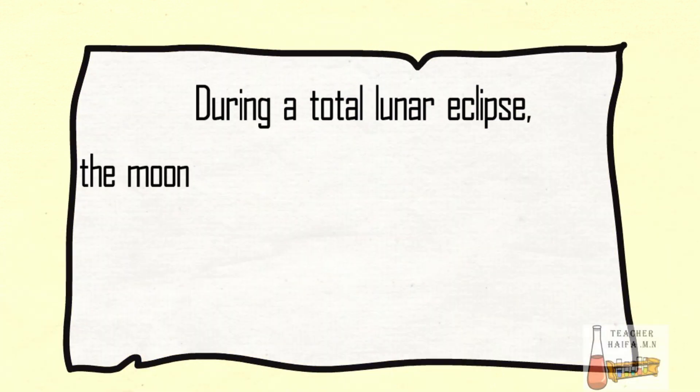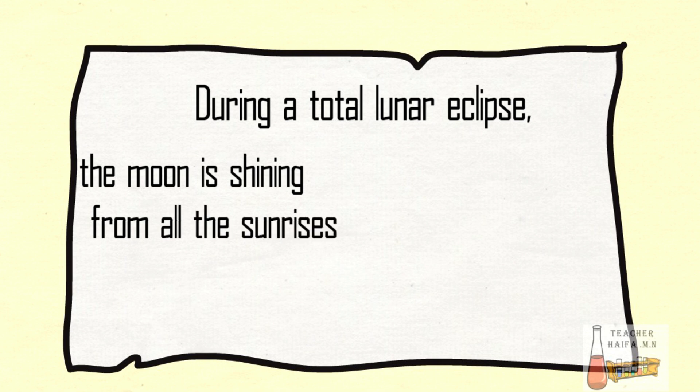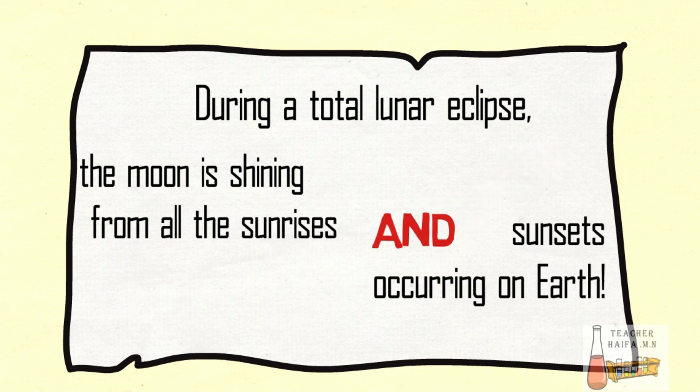During a total lunar eclipse, the moon is shining from all the sunrises and sunsets occurring on Earth.